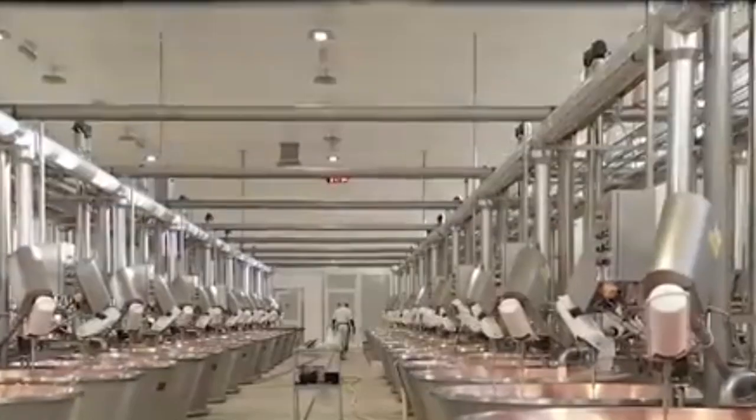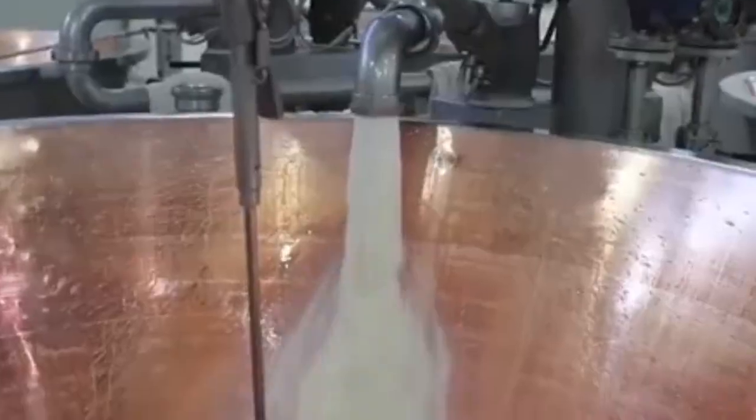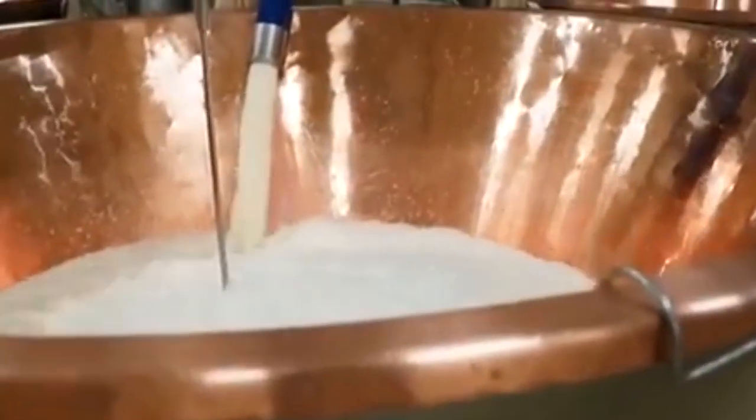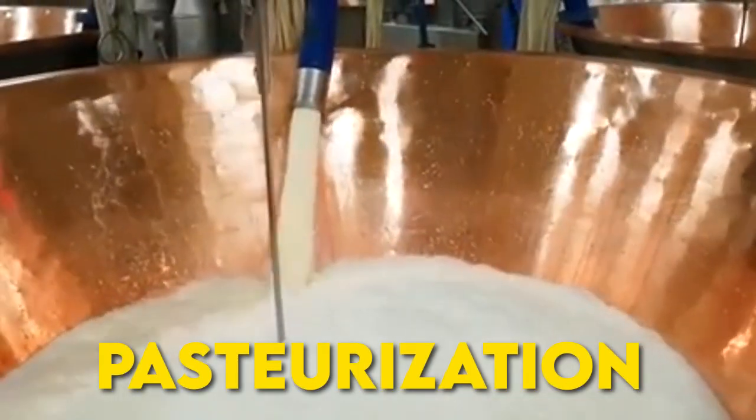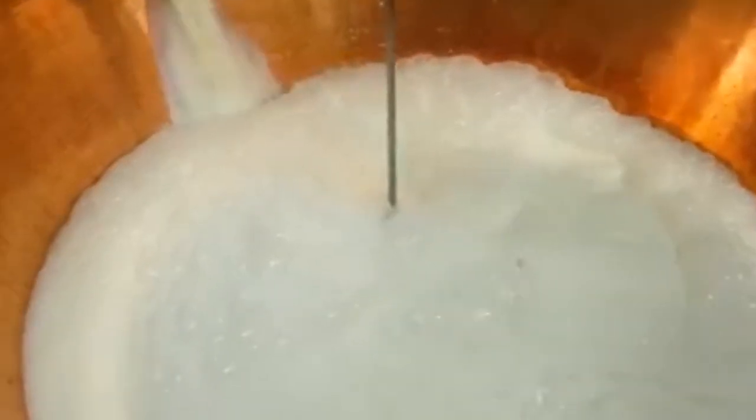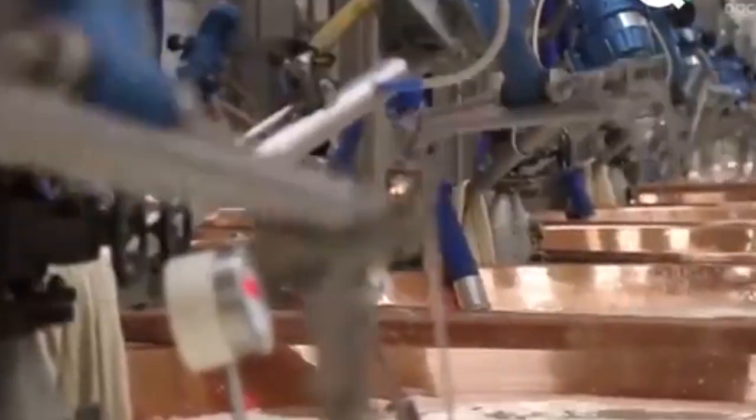Pasteurization: making milk safe. Now it's time to make the milk safe to use. This is done through a process called pasteurization. It sounds like a big word, but it simply means heating the milk to a certain temperature to kill any harmful bacteria. This step doesn't really change how the milk tastes, but it's very important. It helps make sure that the cheese made from this milk is safe to eat and won't make anyone sick.